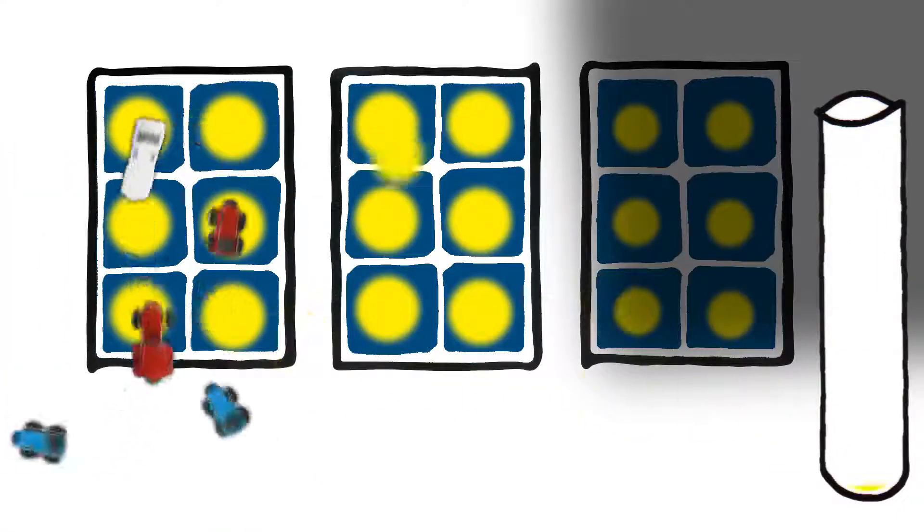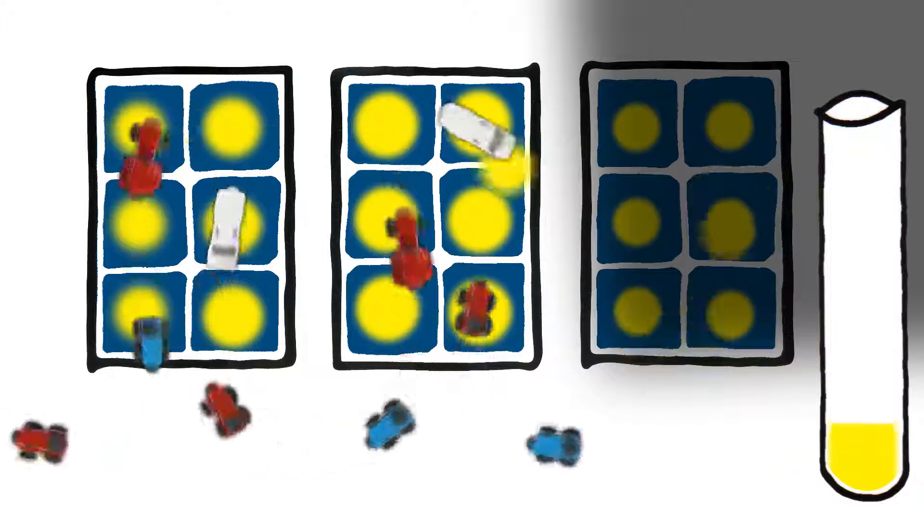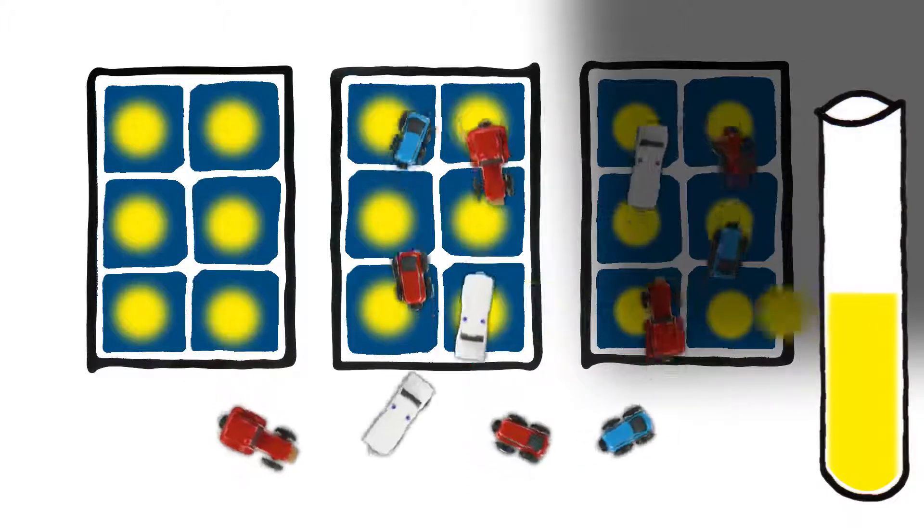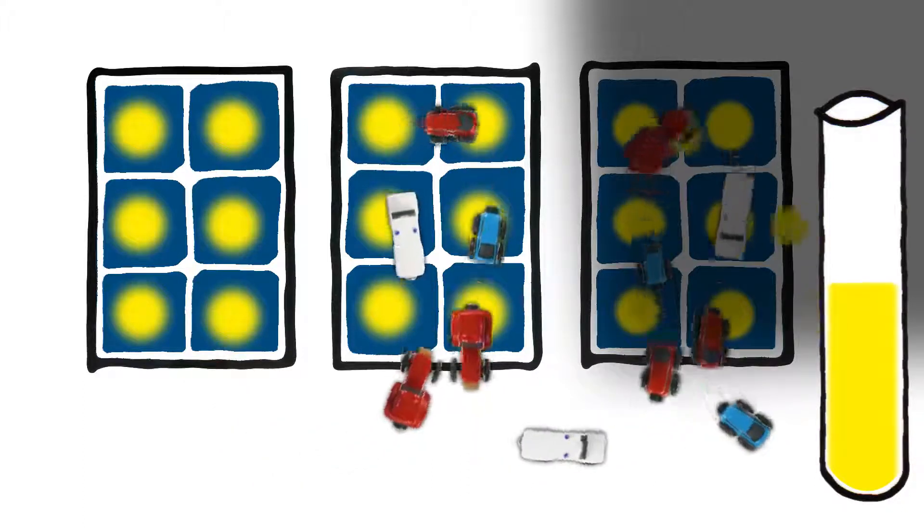Since no one can see electrical current, we use a fleet of cars driving through the modules instead. These cars drive fast in the sunlight and slow in the shade. Then you end up with a traffic jam, of course. And when cars can only drive very slowly, it means you lose a lot of energy yield.